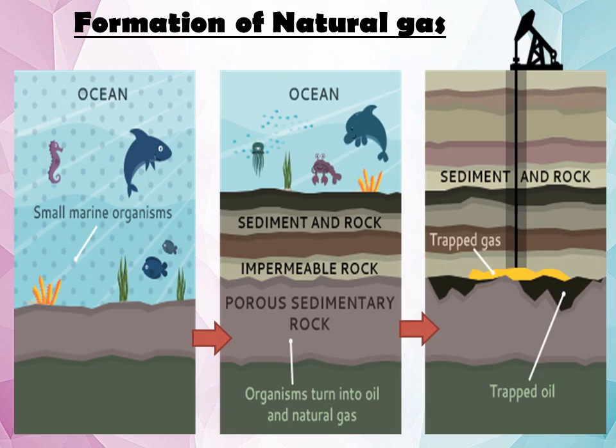The image here shows the formation of natural gas. The process of formation of natural gas is similar to the process of formation of petroleum. Dead bodies of small marine organisms settle at the bottom of the oceans or seas and are covered by layers of sand, silt and clay. Over millions of years, high pressure and temperature due to these layers converts the remains of dead marine organisms into natural gas.